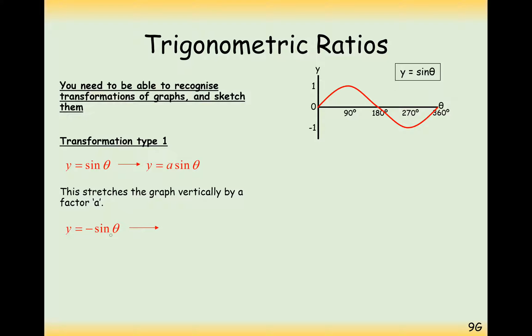If the graph was y equals minus sine x, then we would be reflecting in the x-axis because any positive y-coordinates would now be negative and any negative coordinates would now be positive. This is what it's going to look like here, the reflection of sine, which is minus sine theta.